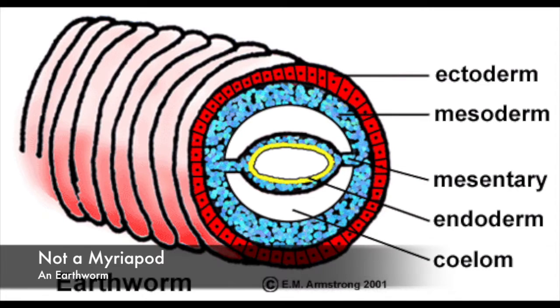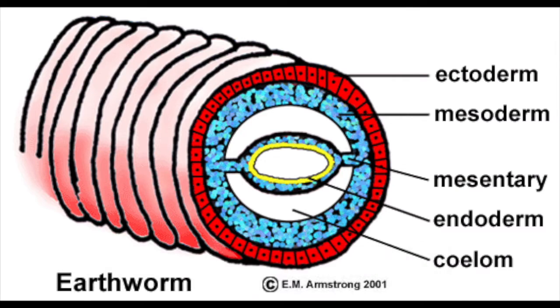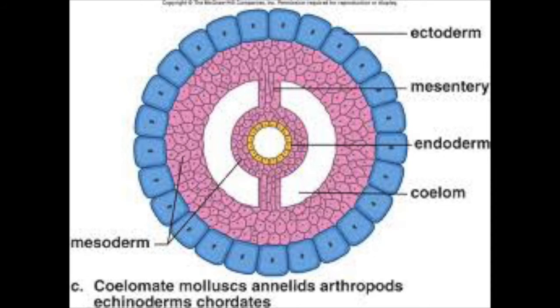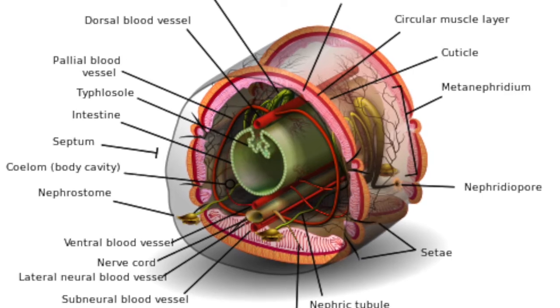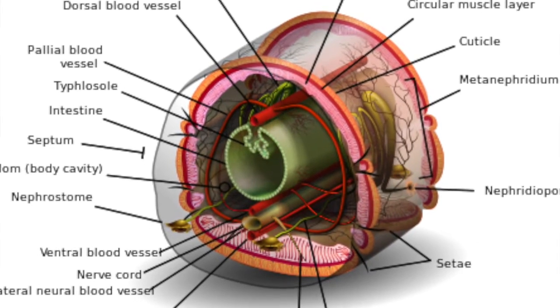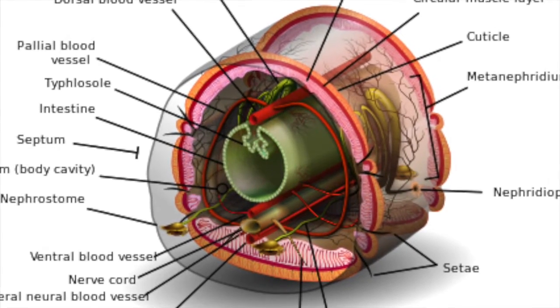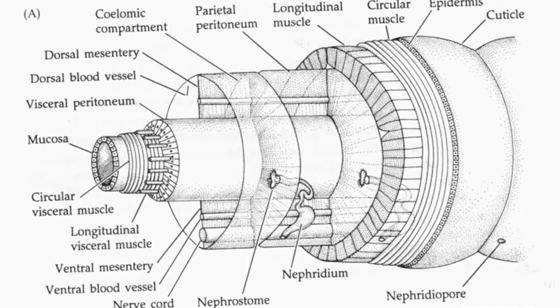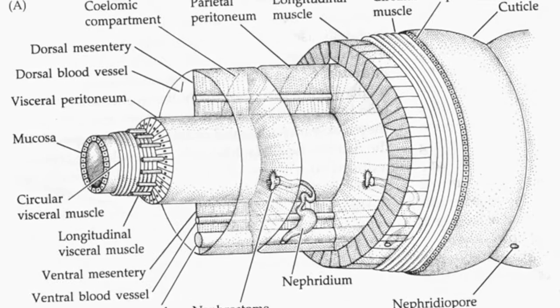A coelom is a cavity lined by an epithelium derived from the mesoderm. Organs that form inside the coelom can move freely, grow, and develop independently of the body wall, while the fluids cushion and protect them from shocks.